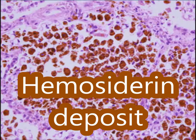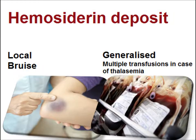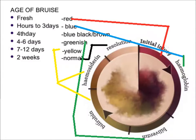Hemosiderin can be deposited locally or in a generalized manner. A common example of local deposition is a bruise. In generalized deposition of hemosiderin, a common cause is multiple transfusions in cases of hemolytic anemia.